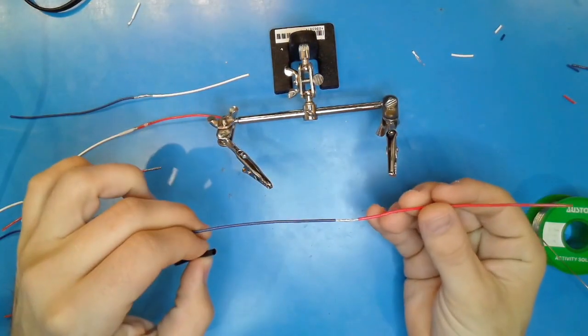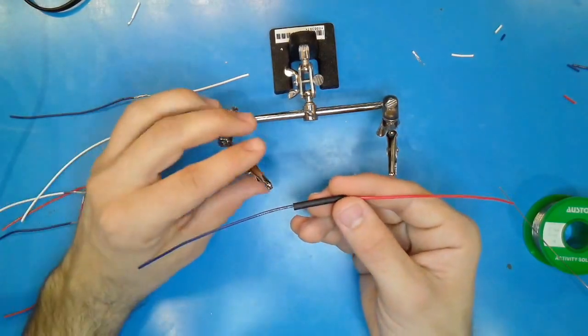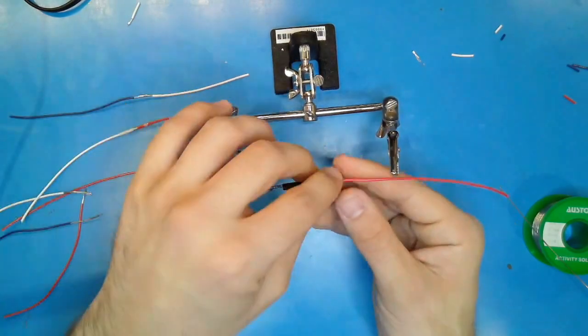Lastly, you can use heat shrink tubing to firm up the connection. This works similarly to solder sleeves, but the soldering of the joint must be done first.